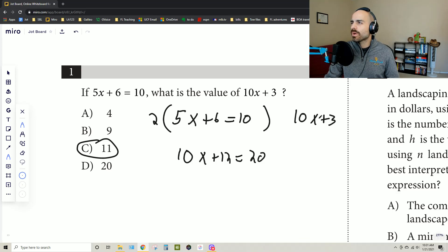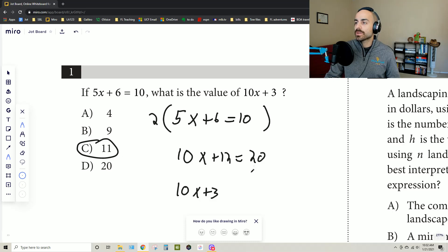And what I see is that, well, the difference between 12 and 3 is going to be what? That's 7, 8, 9, so that's a difference of 9. So if you notice, if 10x plus 12 equals 20, then 10x plus 3, which is only 9 less, would be 11. And that gives us C.